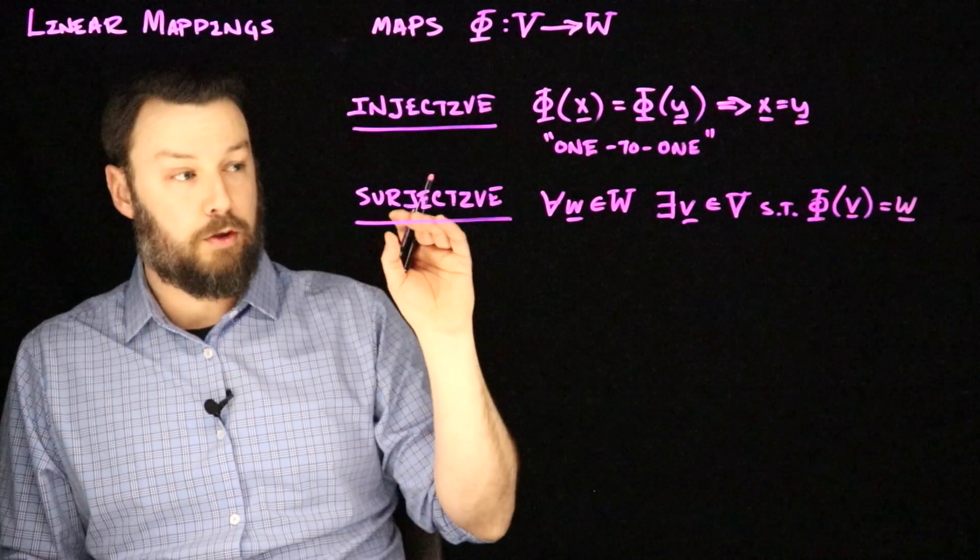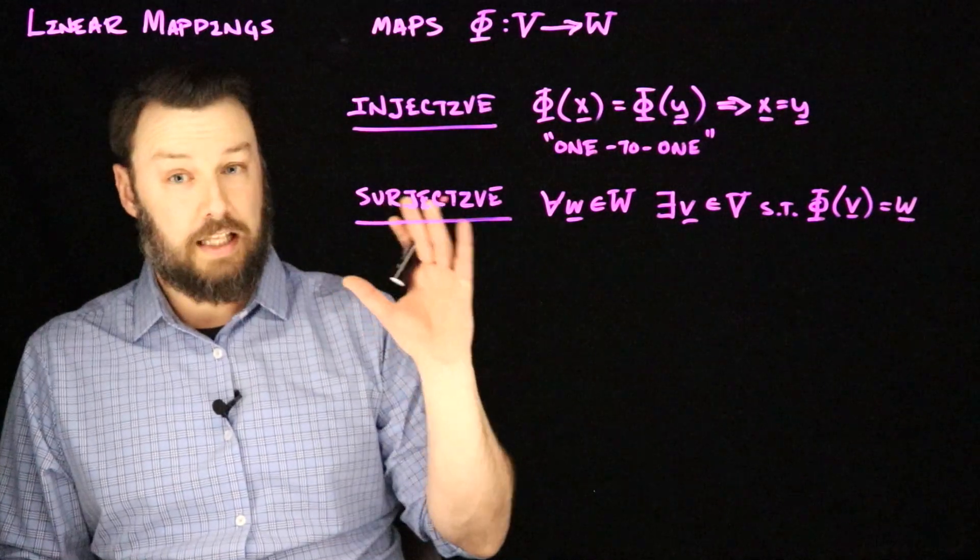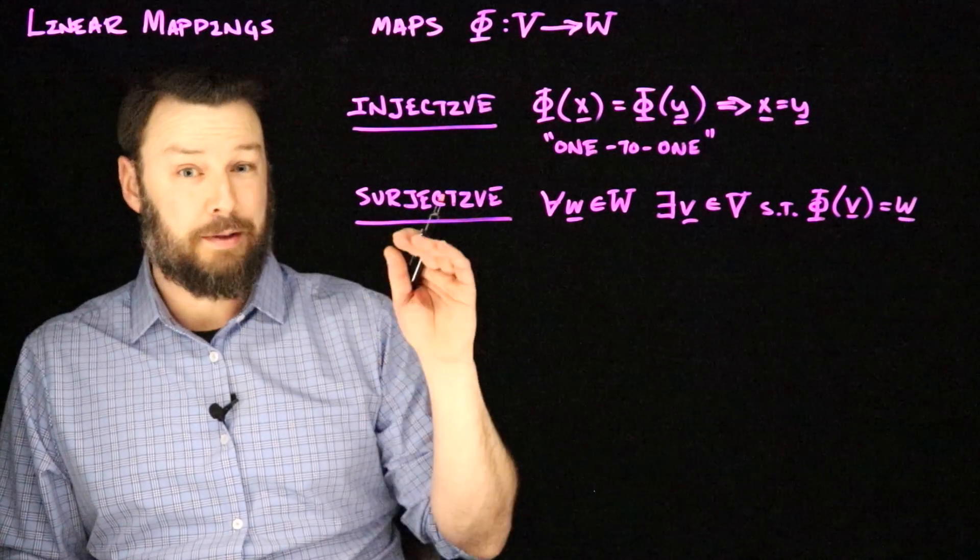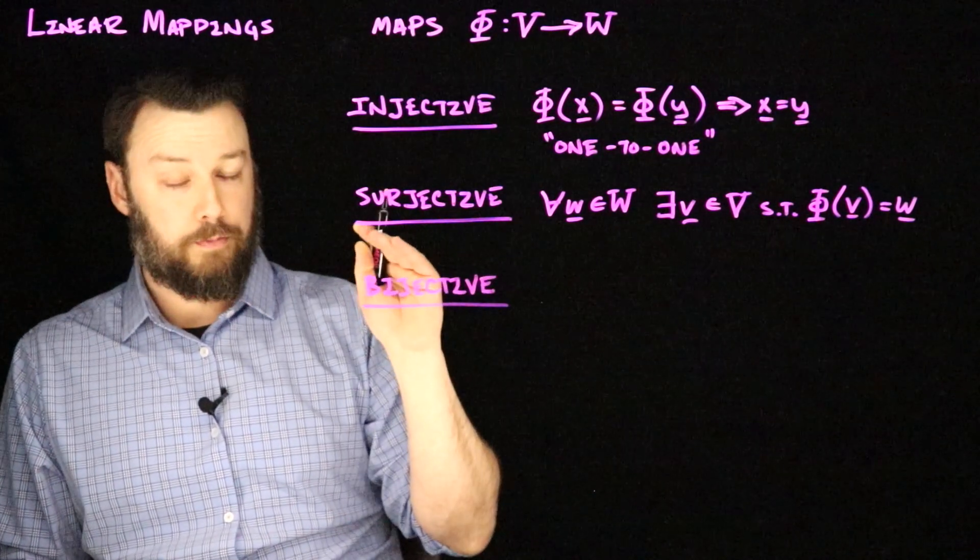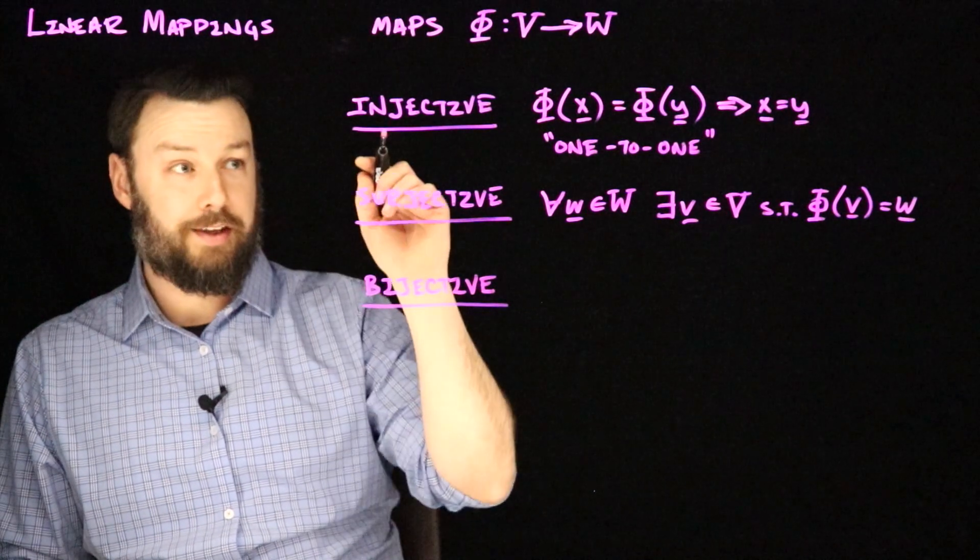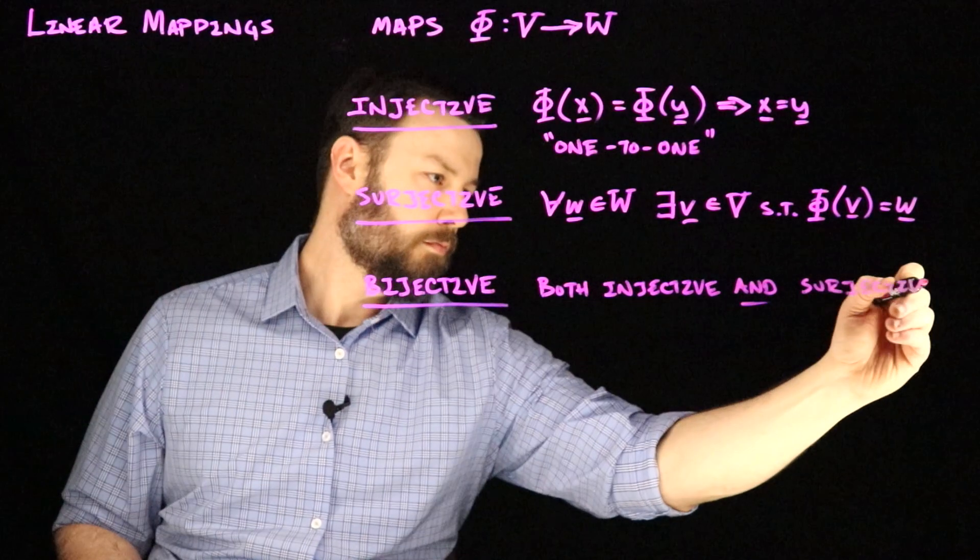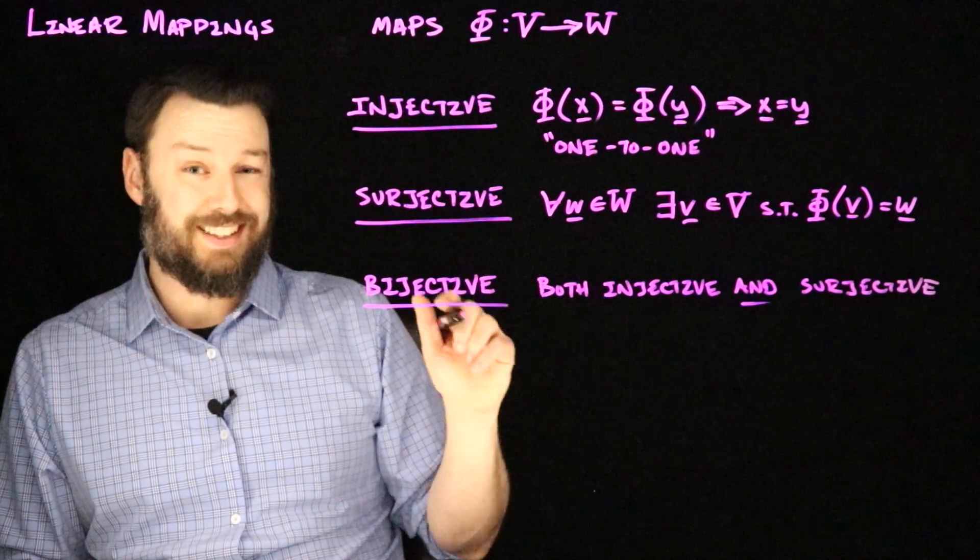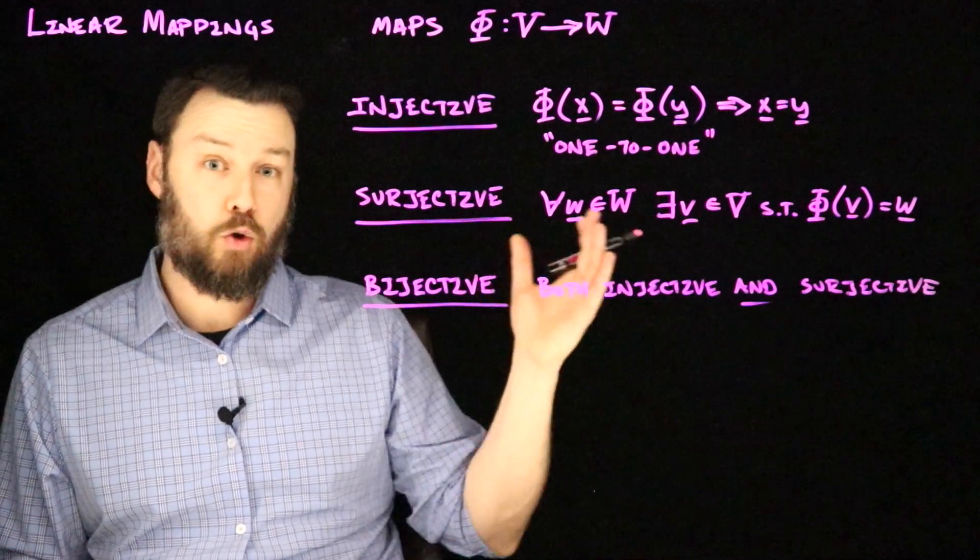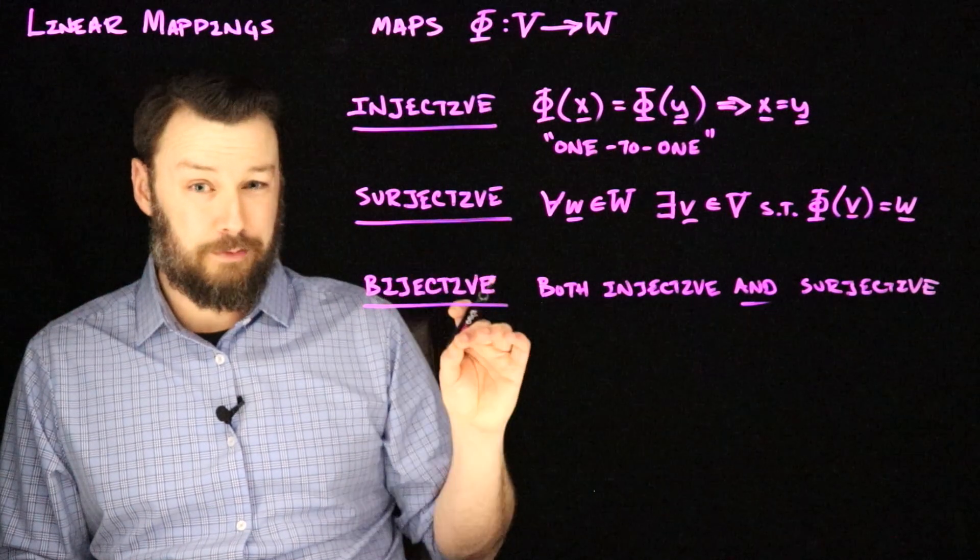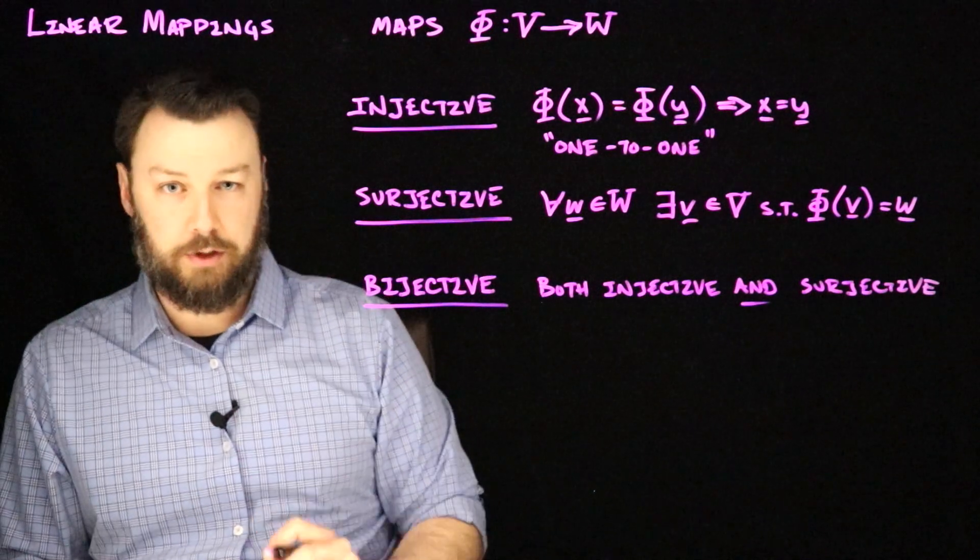Just saying again, this means that no matter what member of W I pick, I can always get there from some V. And then the last thing is we sometimes talk about a map being bijective. And if it's bijective, that means it is both injective and surjective. That means that for every point in W, there is exactly one point in V that corresponds to it. So we might call this a one to one correspondence. This is appealing because it means there is an inverse map.